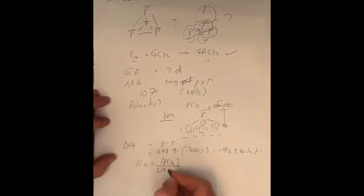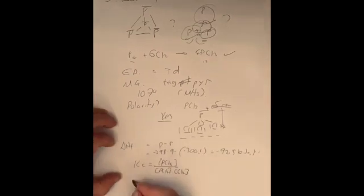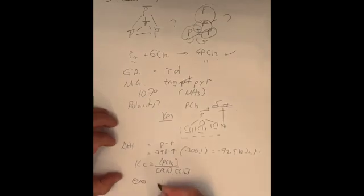Enthalpy of formation, product minus reactants. Then what finally happens to the equilibrium at higher temperatures? It's exothermic, as we previously worked out. Therefore, it will go to the left-hand side.